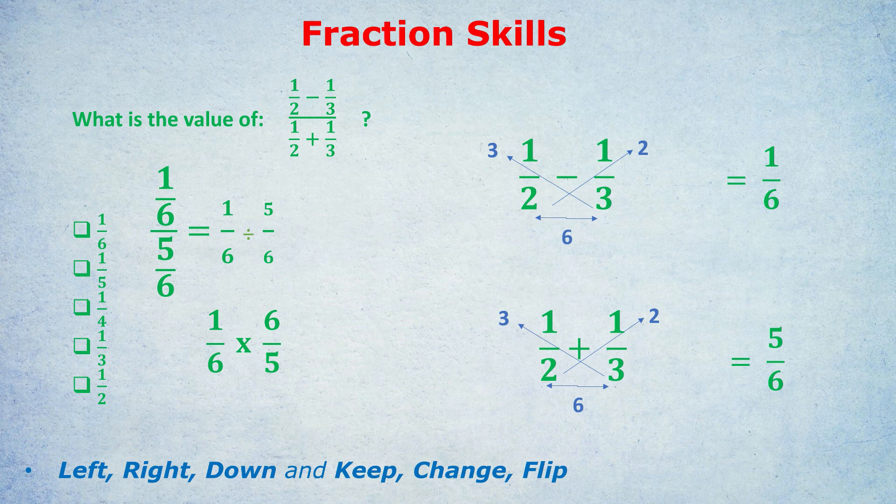And why is that a better way of thinking about it? Because that's easy to work out. You just multiply the top, 1 times 6, and multiply the bottom, 6 times 5, which gives you 6 over 30, which you can simplify to get 1 over 5. That's the clue, by the way, why we change the divide into a times, because the calculation becomes so much easier. You just multiply the top, 1 times 6, multiply the bottom, 6 times 5. 1 times 6 is 6, 6 times 5 is 30.